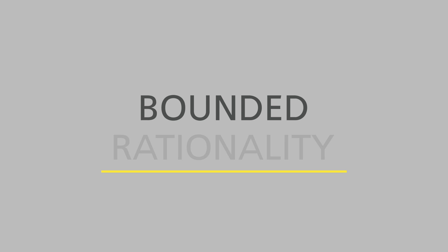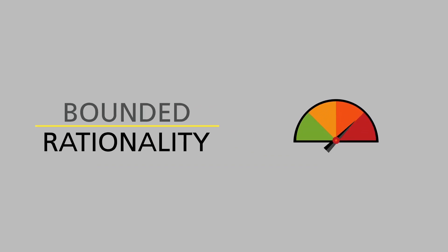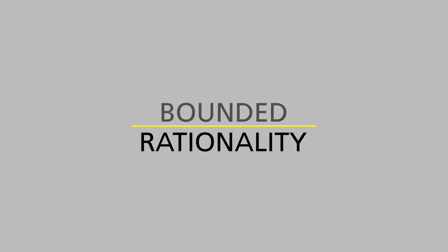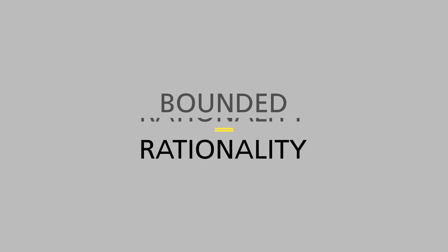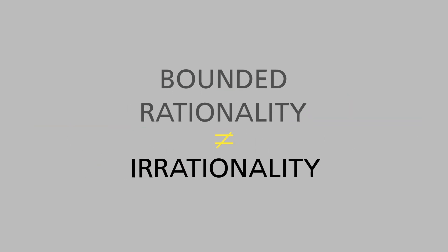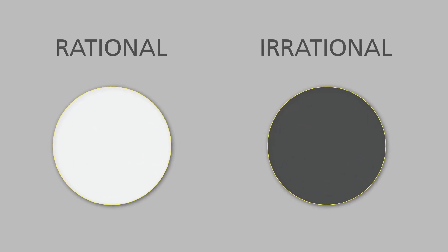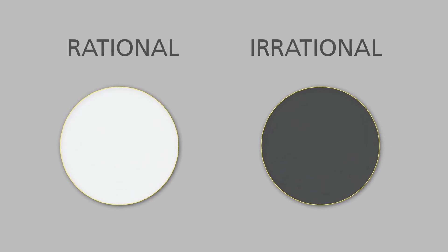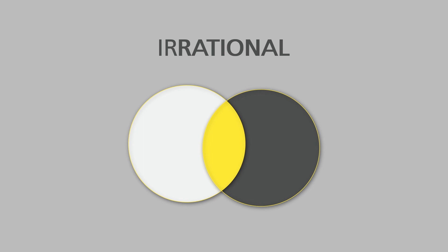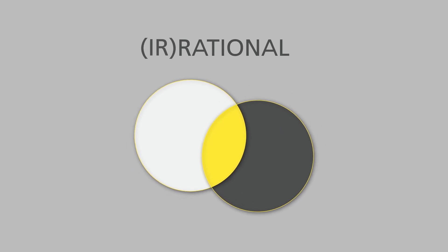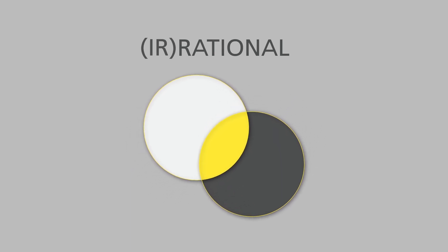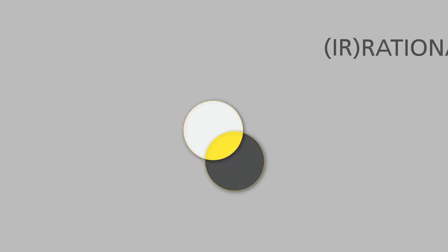Now, bounded rationality says that there are limits on our rationality, but it doesn't mean that we are irrational. It's more of an acknowledgment that we are part rational and part irrational in our actions. We don't operate in binary — we operate on more of a spectrum. And where we sit on this spectrum changes based on our environment and the resources available to us.